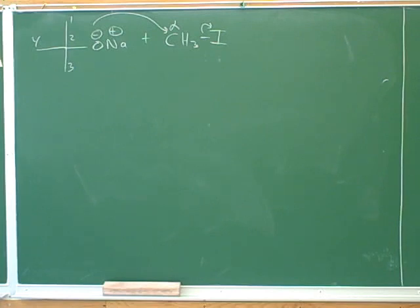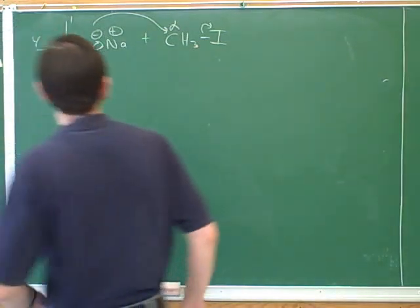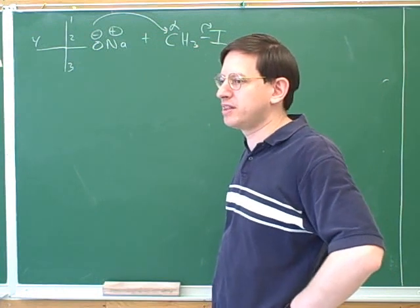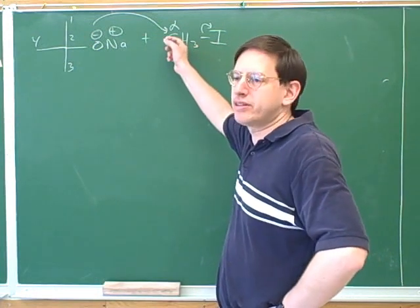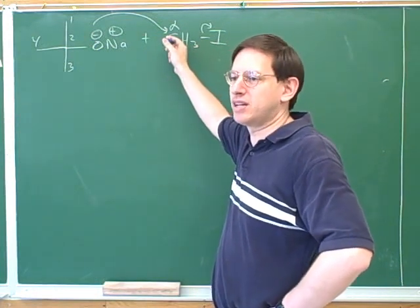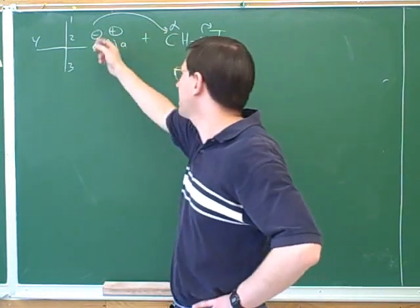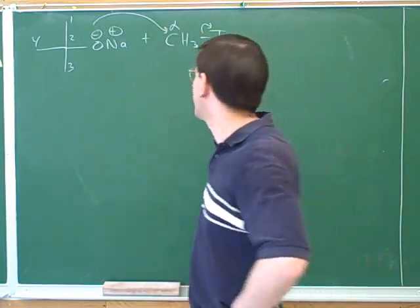We have a bulky base. That's right. This is tert-butoxide. That really is a bulky base, but we're still SN2. There's no way this could be E2 because remember E2 is when we form a pi bond between the alpha and the beta carbon. But this is a methyl, it doesn't have a beta carbon, so there's no way this could be an E2 reaction. So even with this bulky base, we don't need to worry about an E2 reaction happening here.